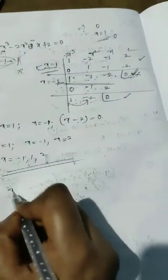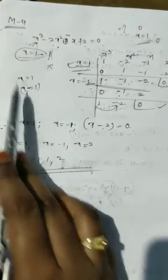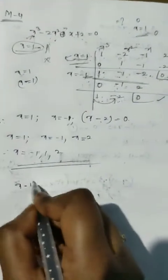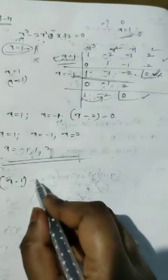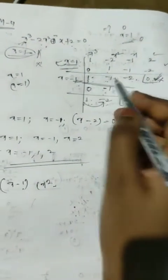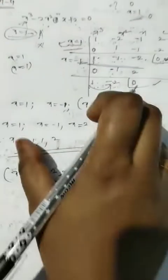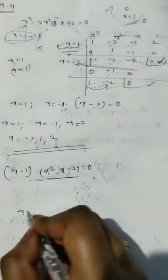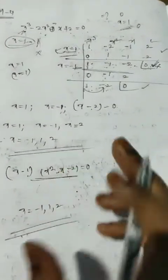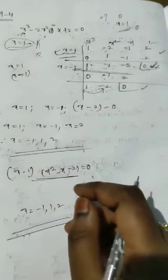So x equals 1, which implies x minus 1 is a factor. Using the quotient x squared minus x minus 2 from synthetic division, factorizing again gives the same results. Therefore x equals minus 1, 1, and 2. So we have found the roots of the cubic equation using these methods. Thank you.